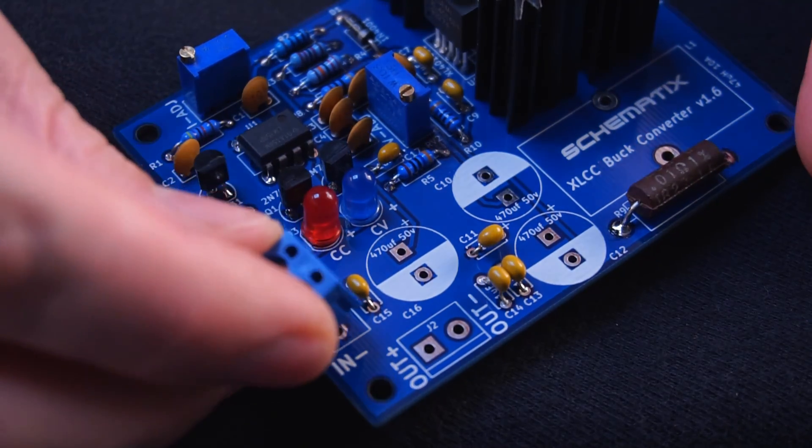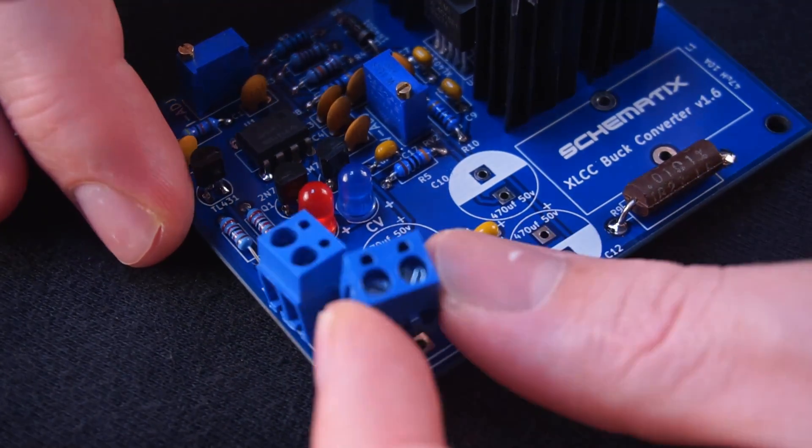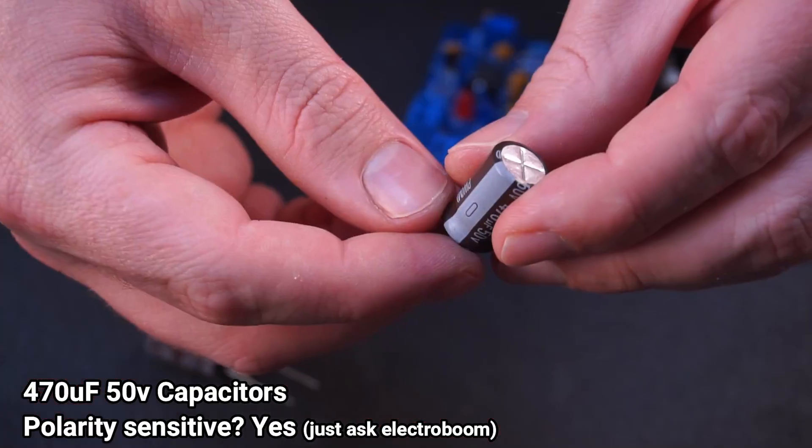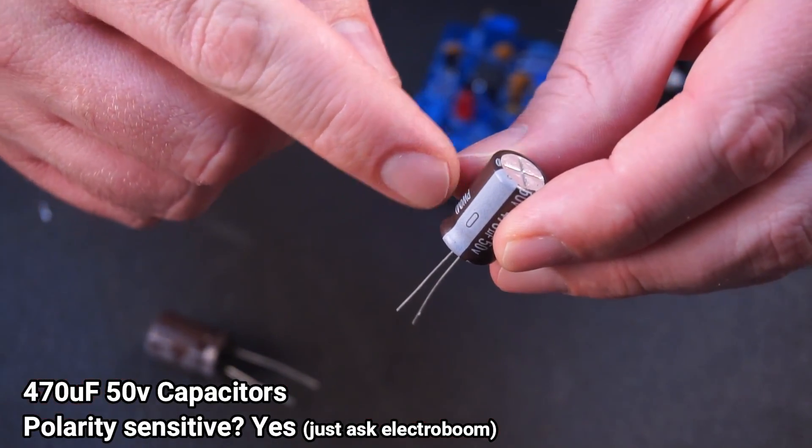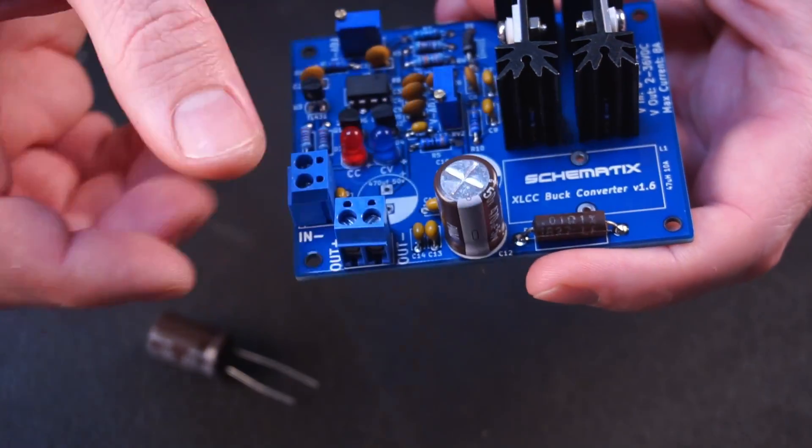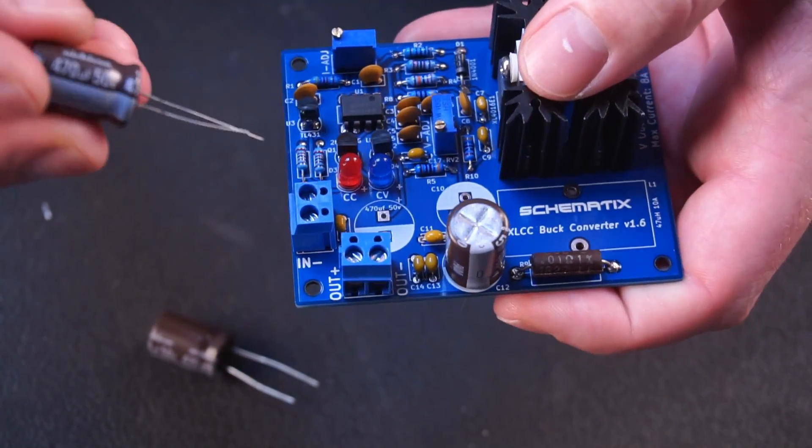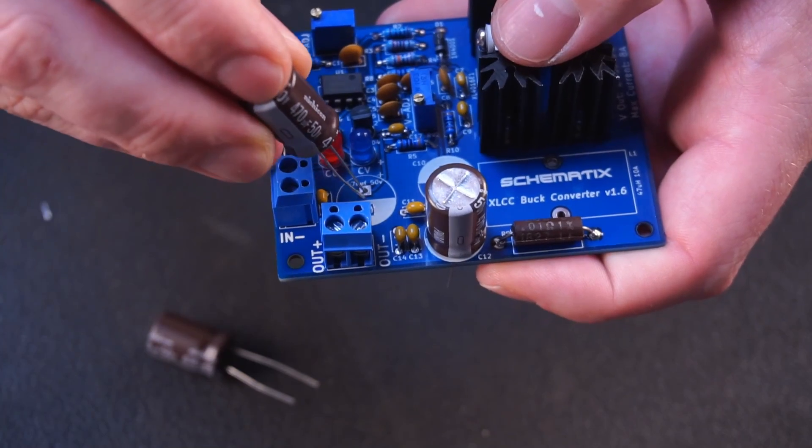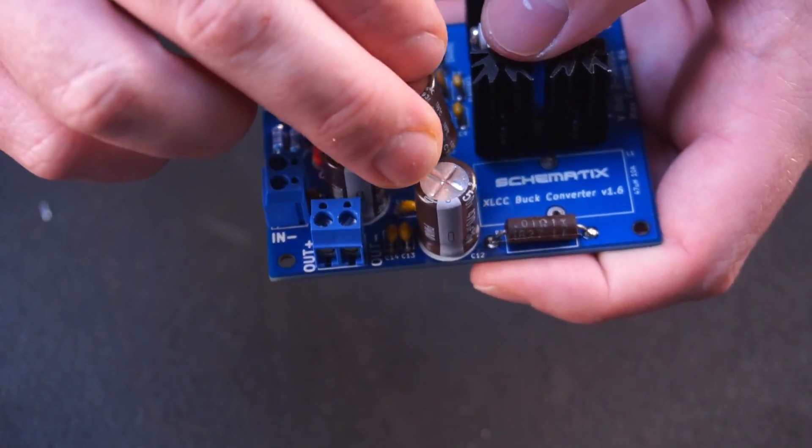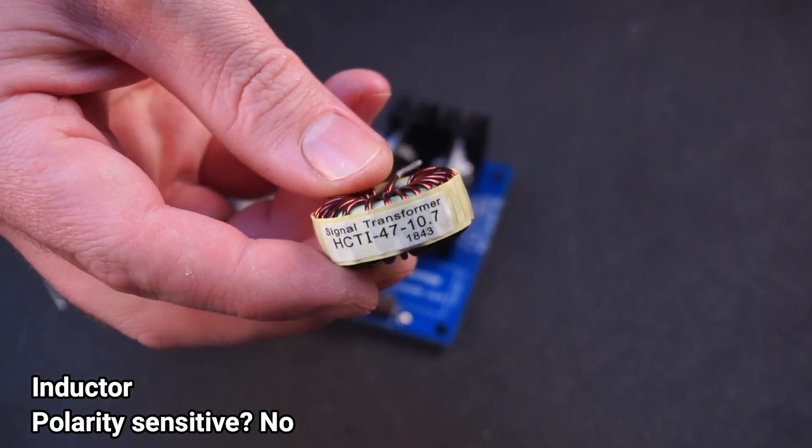Next to be installed was the screw terminals. When it comes to installing the large capacitors pay attention to the white line on the side. This line should be lined up with the white half circle printed on the board where the capacitors are installed. And lastly the inductor can now be installed.